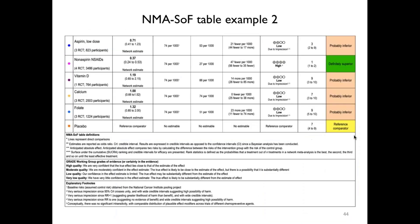We did not change anything for the lower section in this final NMA table format. However, we want to encourage users of this format to use the explanatory footnotes to describe in detail the reasons for the certainty of evidence ratings. Clear explanations in this section allow readers to increase their confidence in an estimate of effect.